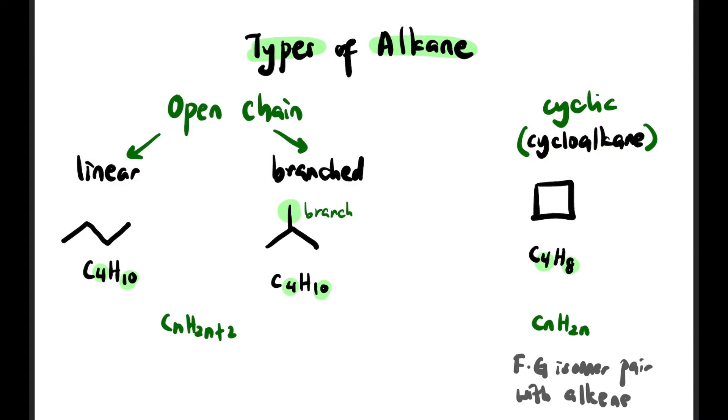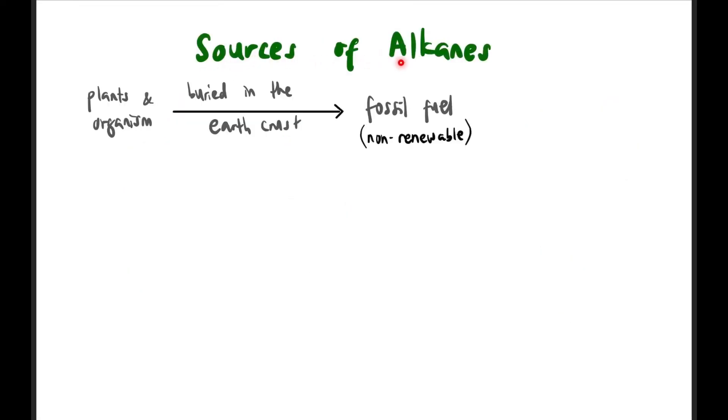You can refer to video 1.5 about isomers. By the way, cyclic alkanes like C4H8 can also be drawn like this: three carbons with one branch. Now let's go to 2.3 Sources of Alkanes.